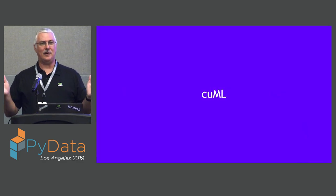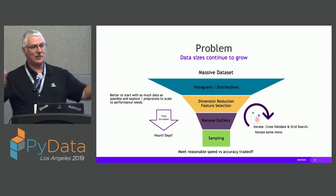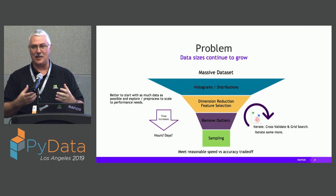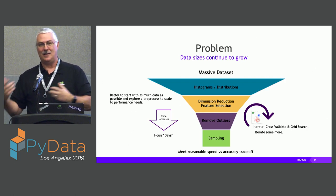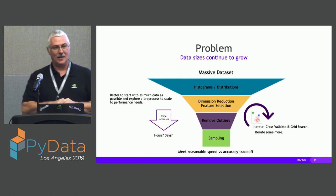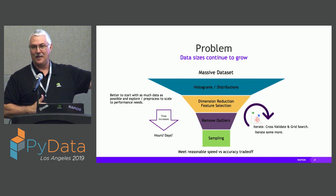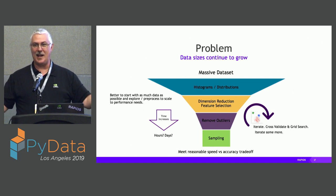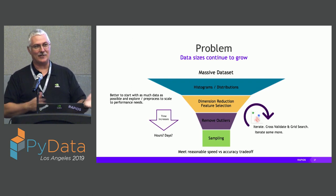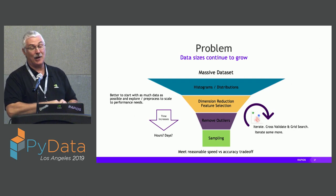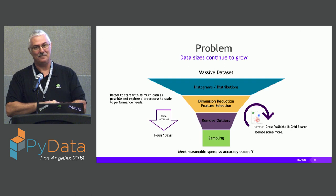For machine learning, traditionally you'd have a ton of data, do dimensional reduction, figure out your feature set, cross-validate, and sample down before running your ML algorithm. There was a talk at our GTC DC conference last month where folks from Capital One said that was their approach, but now with GPUs and RAPIDS they can process all the data just as fast. You don't have to sample anymore — just spread it across GPUs, run your algorithm, get better predictions in the same amount of time, actually faster than the sampled version.